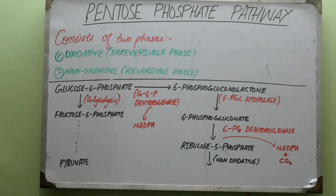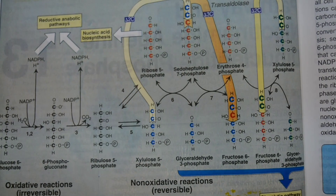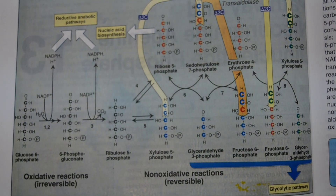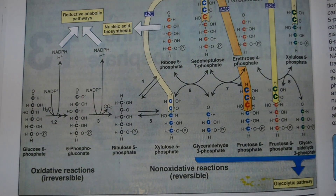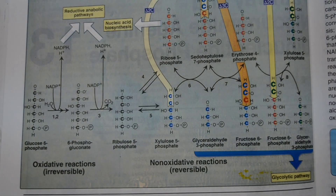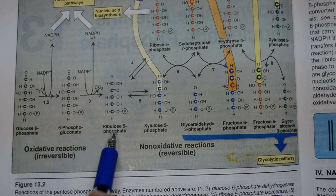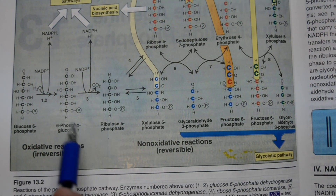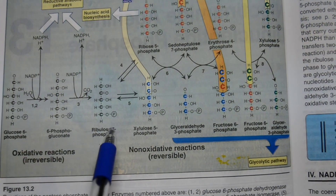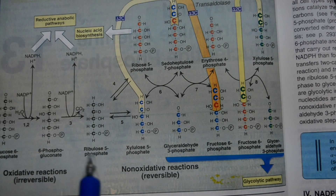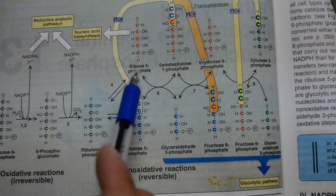I will explain the non-oxidative phase using a diagram from the Lippincott Medical Biochemistry book, 7th edition. So we have made ribulose 5-phosphate from 6-phosphogluconate. This ribulose 5-phosphate has two fates. It can either form ribose 5-phosphate, which is directly used in nucleotide synthesis, via the enzyme ribose 5-phosphate isomerase. Both of these are isomers.